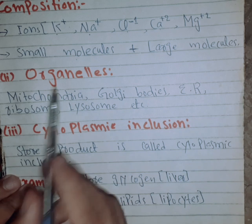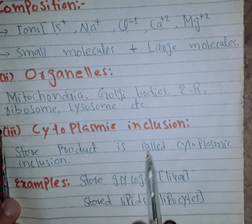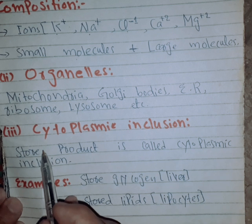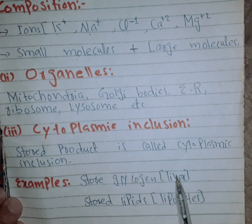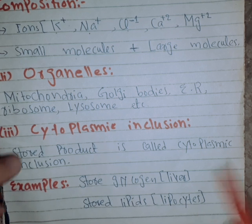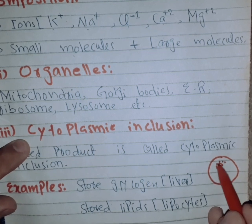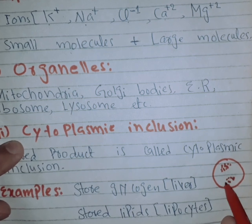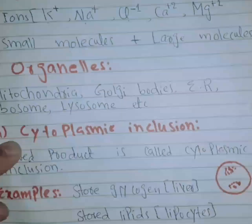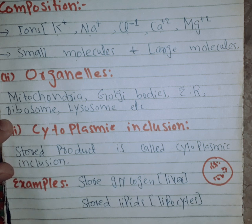The third part of cytoplasm is cytoplasmic inclusions. Cytoplasmic inclusions are stored products inside the cell. For example, if carbohydrates are stored, it is called a carbohydrate inclusion. If proteins are stored, it is called a protein inclusion. If lipids are stored, it is called a lipid inclusion.